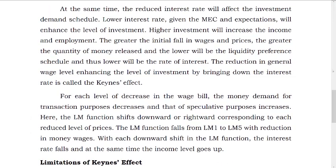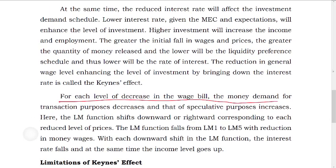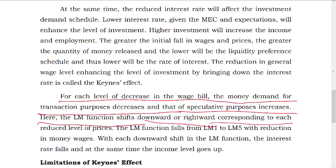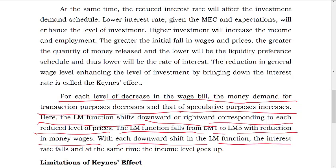For each level of decrease in wages, money demand for transaction purposes decreases and that for speculative purposes increases. Here the LM function shifts downward or rightward corresponding to each reduced level of prices. The LM function falls from LM to LM1 to LM5. With each reduction of money wages, for each downward shift, the interest rate falls and at the same time income level goes up.